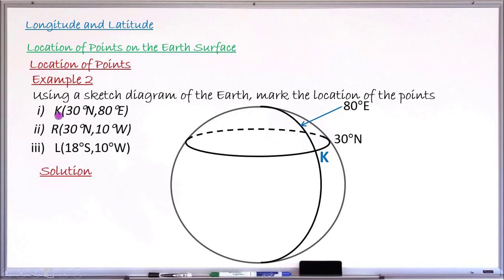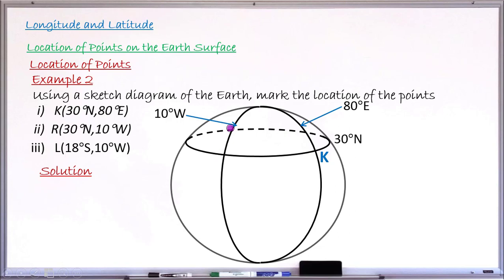Moving to the next point, R: it is on latitude 30 degrees north — the same as point K, so I already have that latitude. But its longitude is 10 degrees west. West is to the left of the middle, so I draw longitude 10 degrees west to the left of the prime meridian. Where longitude 10 degrees west crosses latitude 30 degrees north is the position of point R. I mark that point as R.